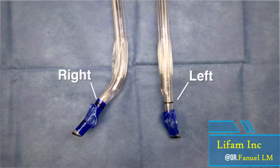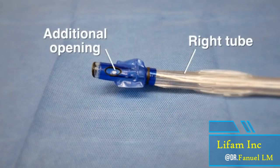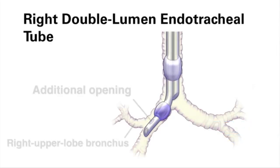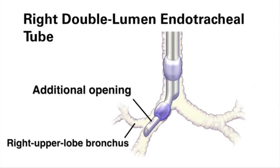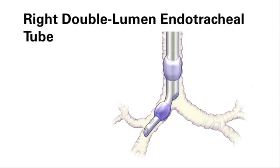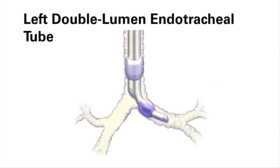Double lumen endotracheal tubes placed on the right side have a different design from tubes placed on the left side. Right-sided tubes have an additional opening to allow for ventilation of the right upper lobe. Consequently, placement of a right-sided tube involves alignment of this additional opening and may require more expertise or troubleshooting than placement of a left-sided tube. In most thoracic procedures, the airway can be managed successfully with placement of a left-sided tube.